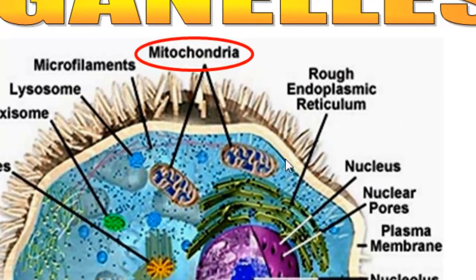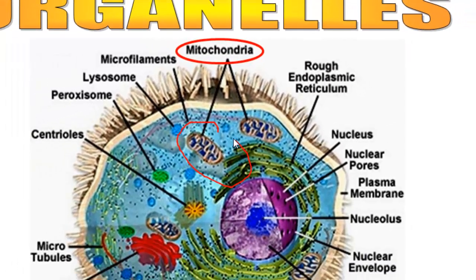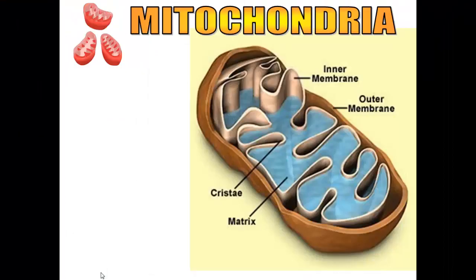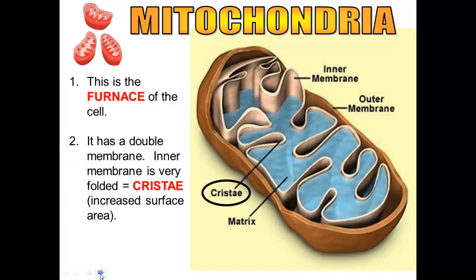Next we'll talk about the mitochondria. The mitochondria is quite easy to recognize — it almost looks like a swimming pool. The mitochondria is the furnace of the cell; it makes all the energy that your body needs to do the things you do daily. It has two membranes. The inner membrane is called the cristae, and it's quite folded up and twisty, which provides a lot of surface area for all the reactions that occur across the cristae.